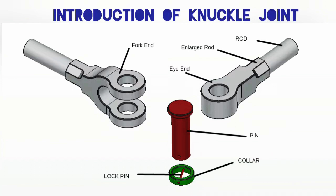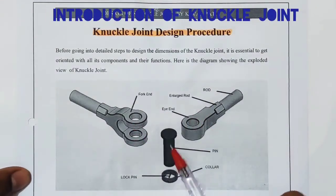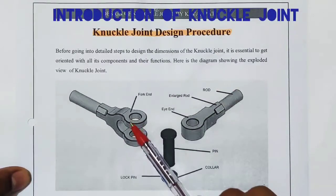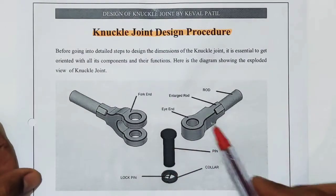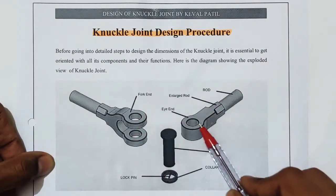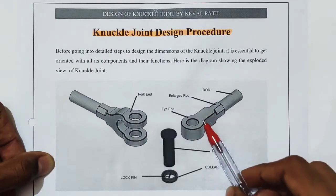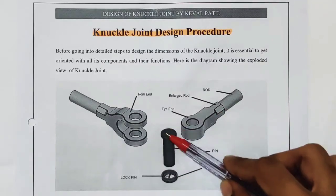Before going into the detailed steps to design the dimensions of the knuckle joint, it is essential to get oriented with all its components and their functions. We have three major parts of knuckle joint: first is the fork end, also called the double eye; second is the eye end, also called the single eye; and third is the pin and collar.